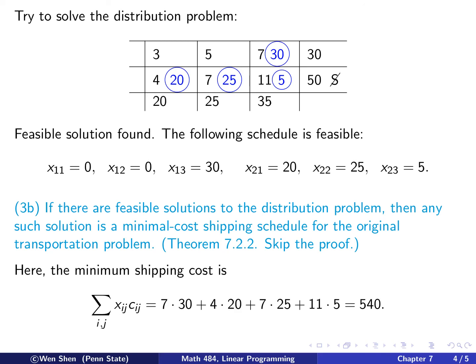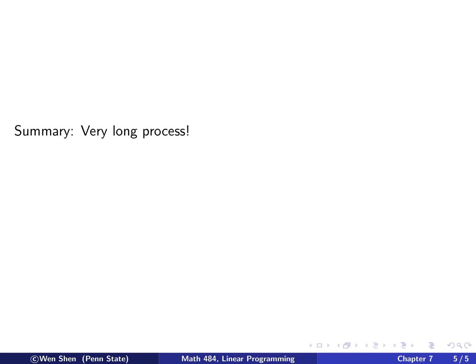So that's solving the problem with two origin and three destinations. What do you think? So it's fair to say that this is a very long process. You need to be patient. So that is all we are going to cover for this chapter. And I encourage you to read at least one more example from the textbook, 7.2.3, to get yourself very comfortable with this algorithm. So that's all for this one. Thanks. Bye.